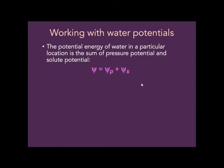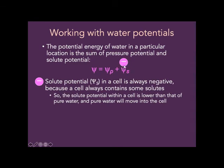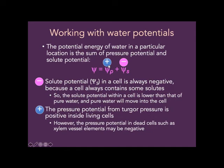The potential energy of water wherever it happens to be is the sum of the pressure potential and the solute potential: psi = psi-sub-p + psi-sub-s. Solute potential is always negative because the cell always contains some solutes, so its solute potential is lower than that of pure water, and pure water will move into the cell. The pressure potential from turgor pressure is positive in living cells — the turgor pressure pushes outward. In dead cells like xylem vessel elements, pressure potential might be negative.